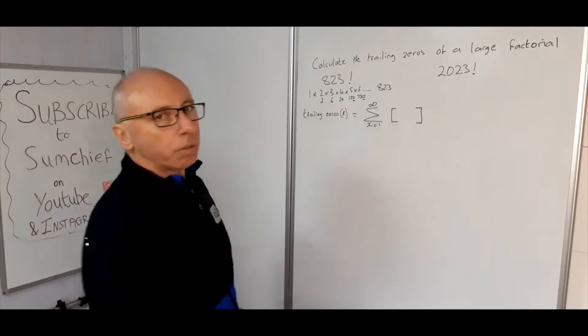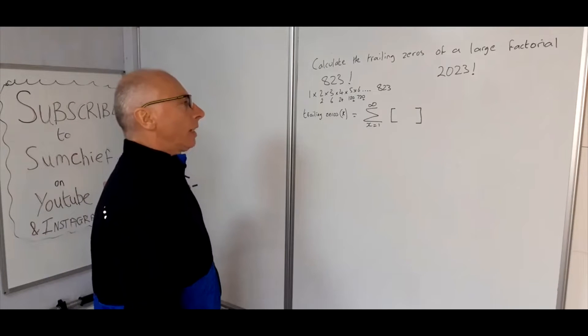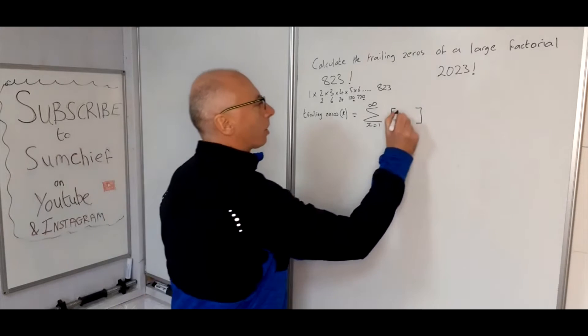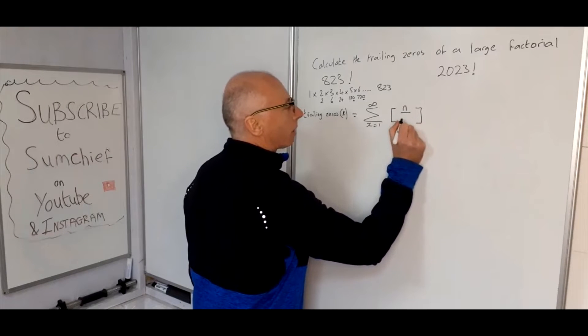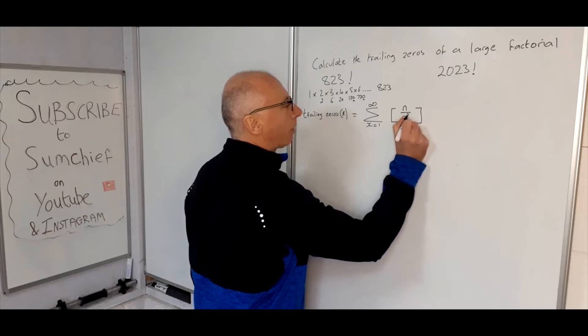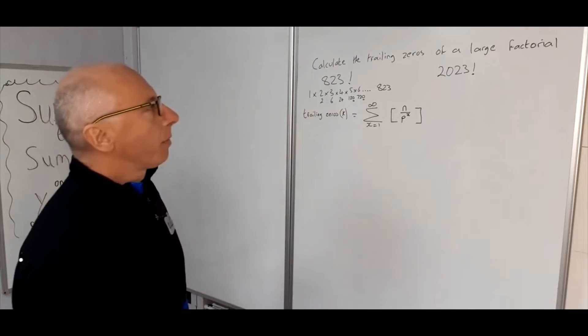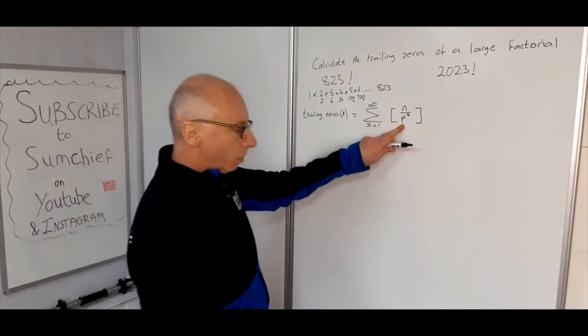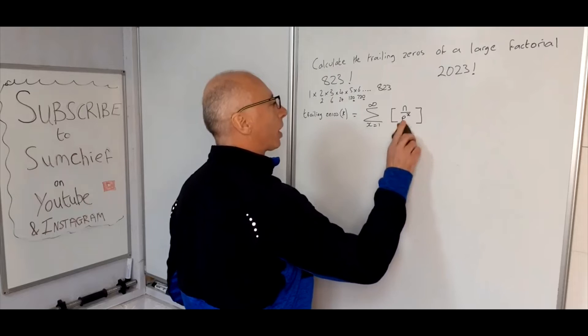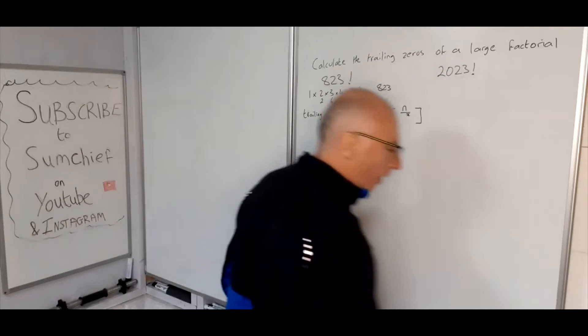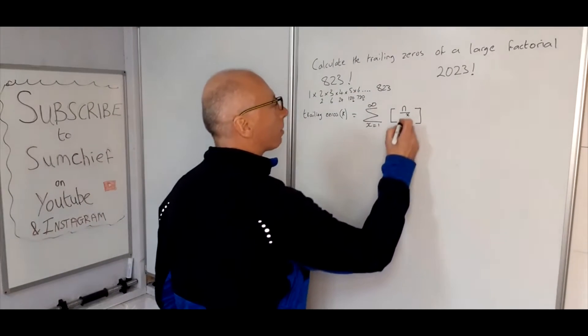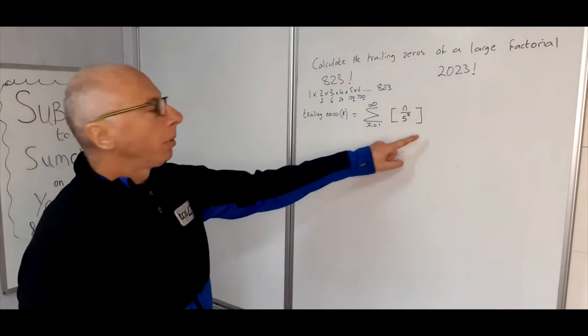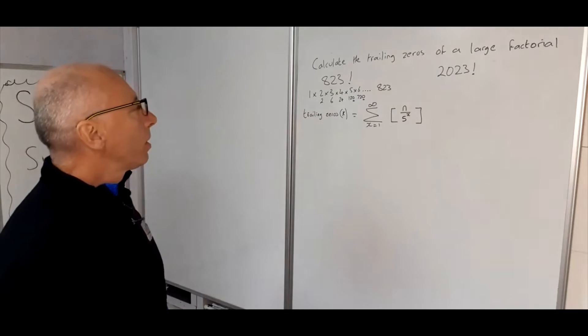The number inside here is going to be derived from a formula, so it's going to be n divided by prime number to the power of x. Because we're looking for trailing zeros and we're interested in 5, we want this prime number to be 5, so let's just change this p to be a 5. Then we sum all these up and we hopefully get the number of trailing zeros.